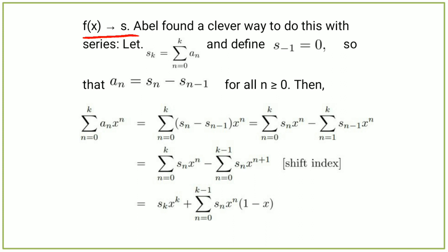Then the summation from n equals 0 to k of aₙxⁿ equals the summation from n equals 0 to k of (sₙ minus sₙ₋₁) times xⁿ, which equals the summation from n equals 0 to k of sₙxⁿ minus the summation from n equals 0 to k of sₙ₋₁xⁿ.